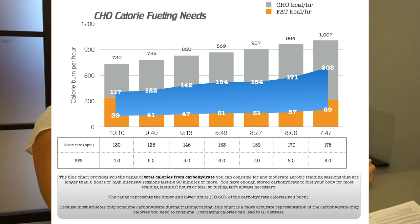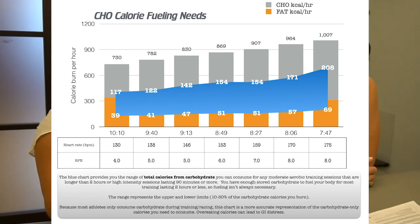Not every workout needs to be fueled. If you're doing moderate intensity for two hours or less, you don't need calories — in the heat you'll need electrolytes but not calories for fuel. That goes back to allowing your body to draw on its stored resources. For high intensity, the threshold is 90 minutes. As your body changes and the line changes, these numbers will shrink down.